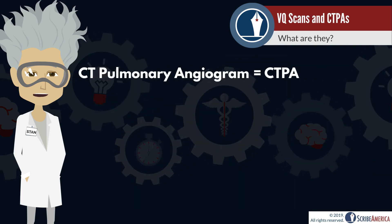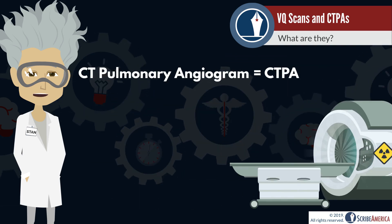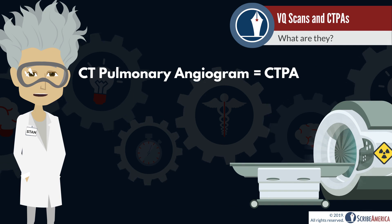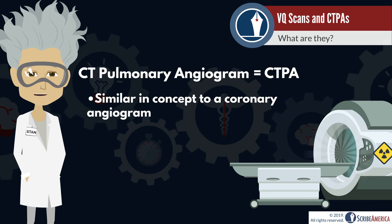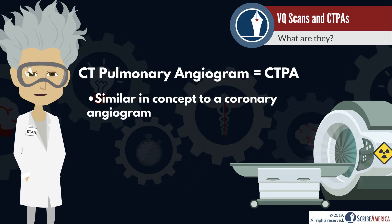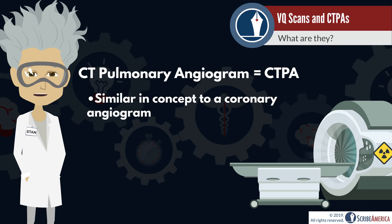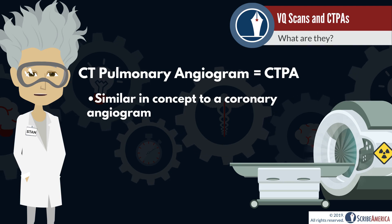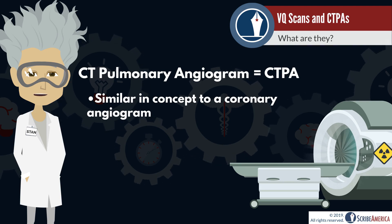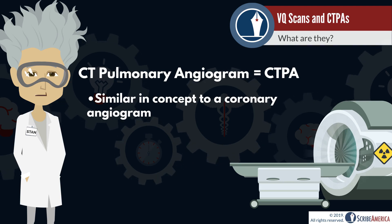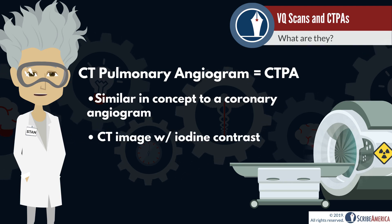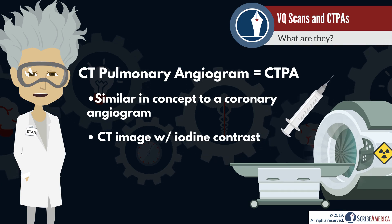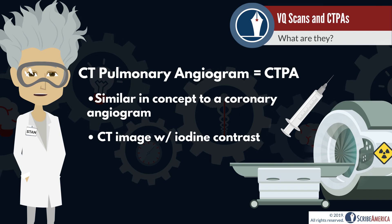The CT pulmonary angiogram, or CTPA, works similarly to the coronary angiogram discussed in a prior Medical Minute, but in this case we're focusing on the pulmonary arteries. A bolus of iodine-containing contrast agent is intravenously injected and images are taken as the contrast passes through the pulmonary arteries and throughout the lungs.